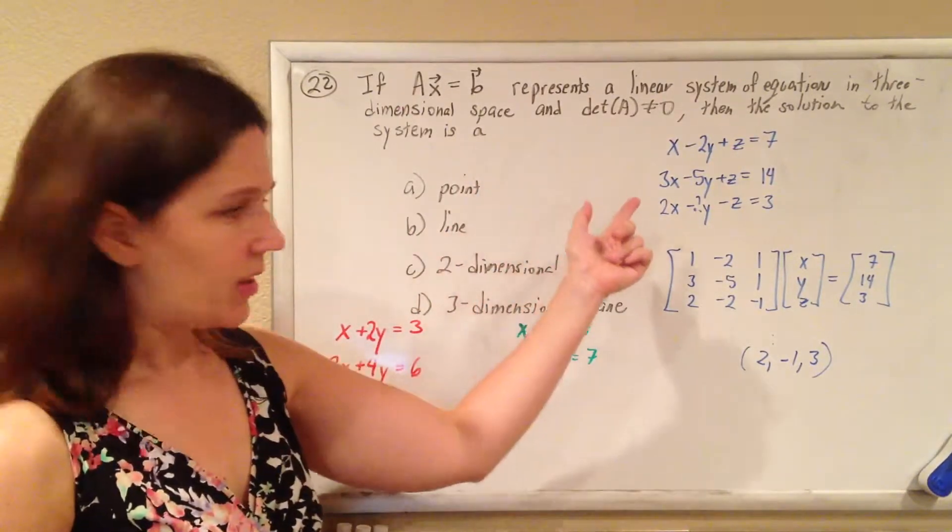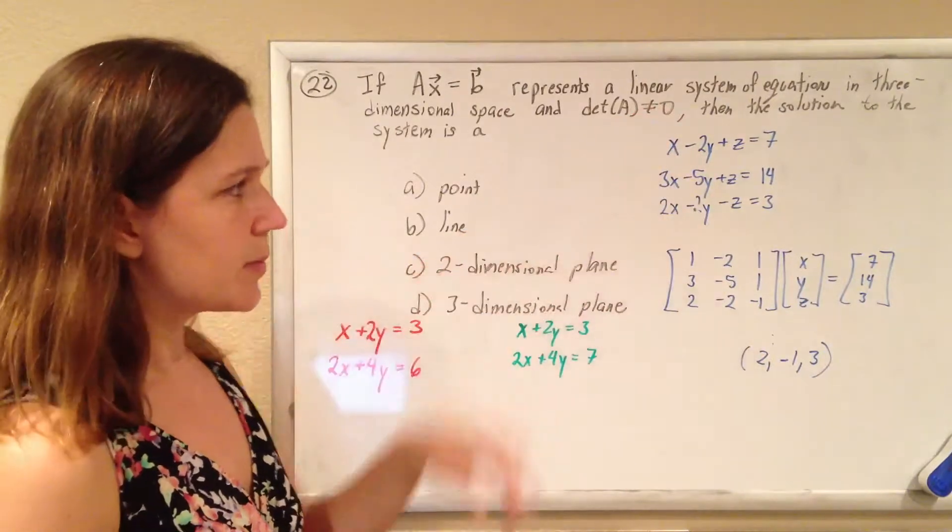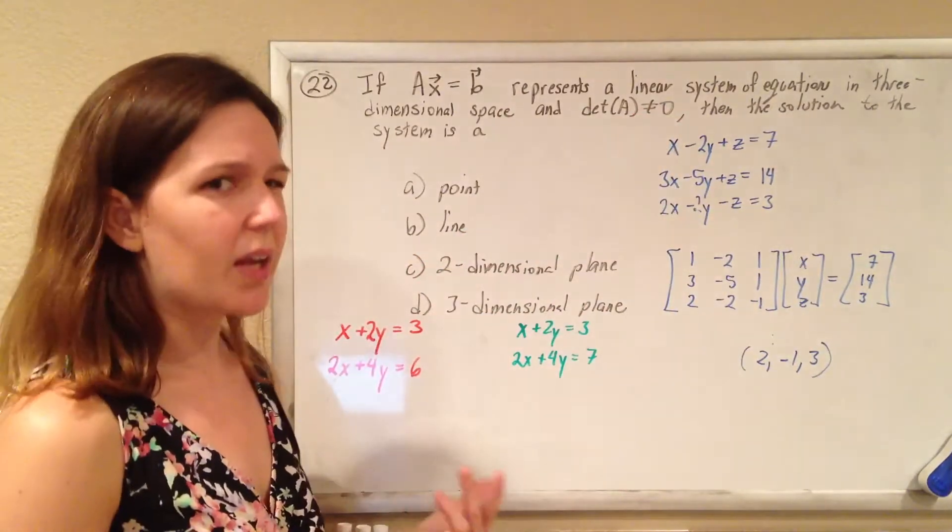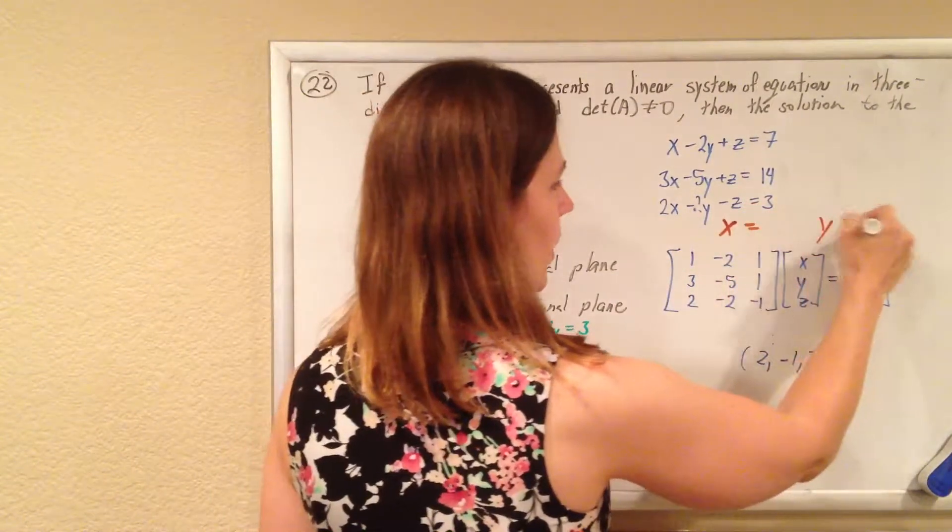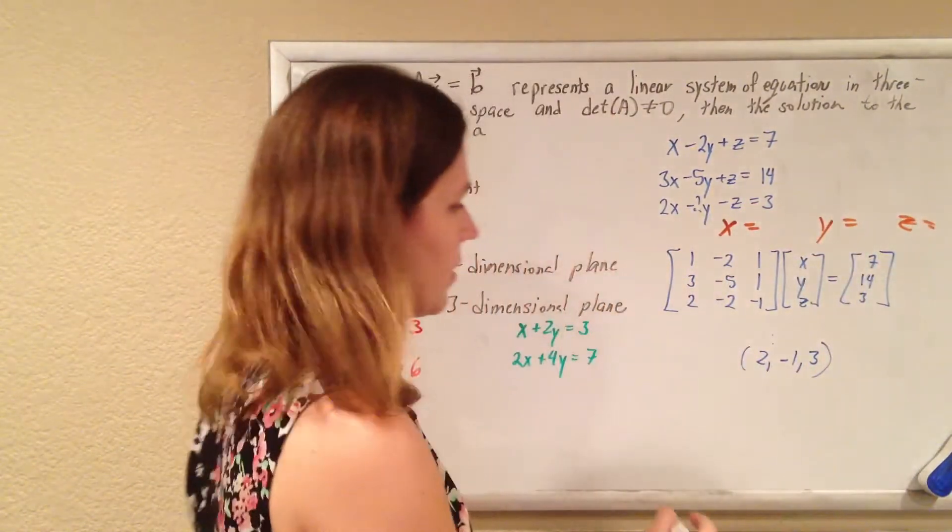And you're used to solving this, and when you solve a system of three equations and three unknowns, what's your answer? You get something for x, right? x equals something, y equals something, z equals something.